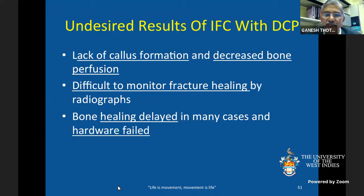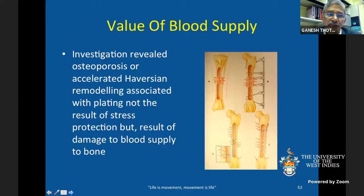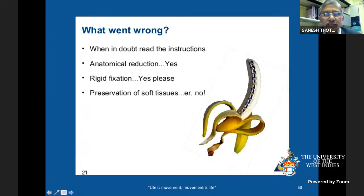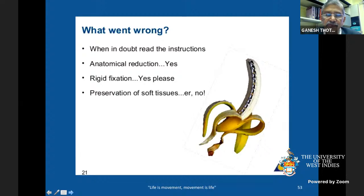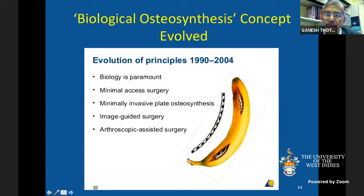Until around 1990, fracture fixation focused on reducing fragments, providing stable fixation, and preserving blood supply with early mobilization. Unfortunately, some undesired results occurred due to interfragmentary compression — lack of callus formation, decreased bone perfusion, and with direct bone healing, difficulty observing whether the fracture was actually healing. Delayed unions and hardware failures occurred. Blood supply disturbance from implants and surgical technique was a major issue, even when anatomical reduction and rigid fixation were performed well.